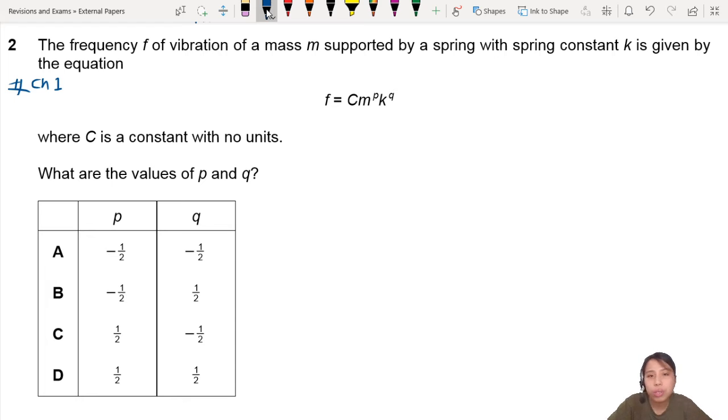Let's list out all the units we know first. Frequency f - we know it's hertz, but there's also another unit, per second, because hertz is per second. So c has no units, that's done.